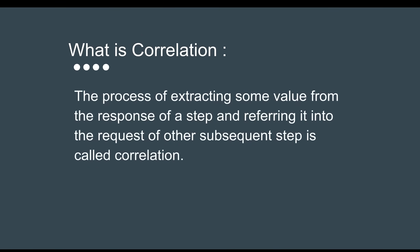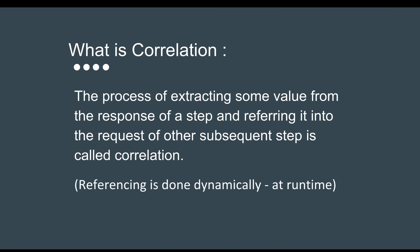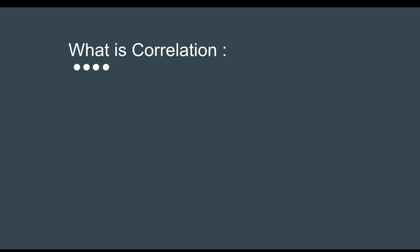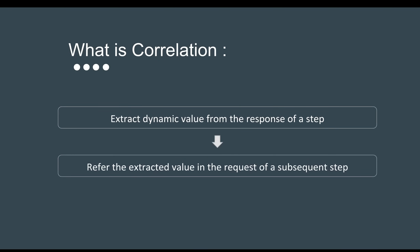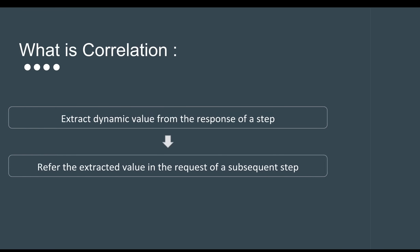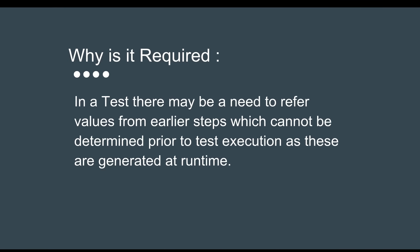Correlation is a process whereby we fetch a value from the response of a step and then refer this value into the request of any subsequent step, and this happens at runtime. Therefore, we also call it dynamic referencing. Correlation is essentially a two-step process: first, we extract the dynamic value from the response of a step, and then we refer this extracted value into the request of a subsequent step.